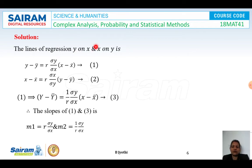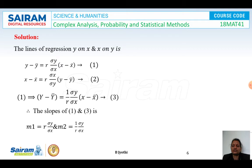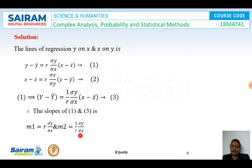Solution: The regression line of y on x is y minus y-bar equals r*(sigma_y/sigma_x)*(x minus x-bar) — call this equation 1. The regression line of x on y is x minus x-bar equals r*(sigma_x/sigma_y)*(y minus y-bar) — call this equation 2. Rewriting in slope form, the slopes are m1 equals r*(sigma_y/sigma_x) and m2 equals (1/r)*(sigma_y/sigma_x).